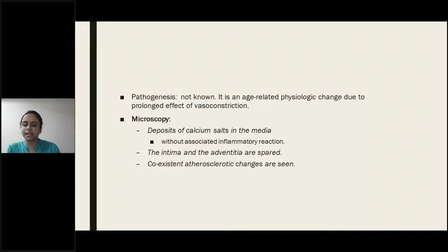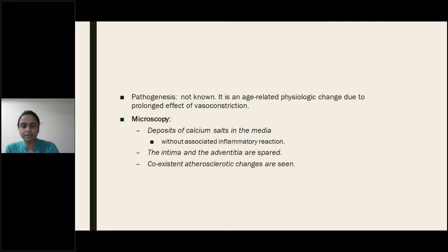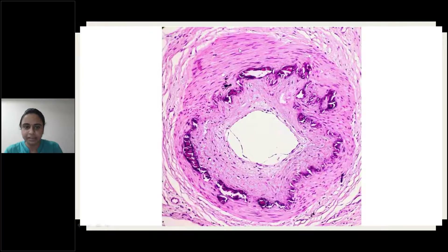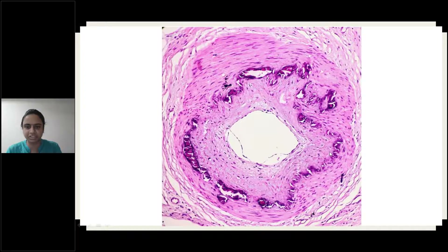So how will you see calcium in histopathology? It is a refractile, acellular, granular substance. See here — this is an artery. This is the intima, this is the media, and this is the adventitia. Here the intima is normal — you can see the endothelial lining.